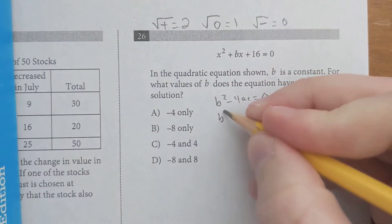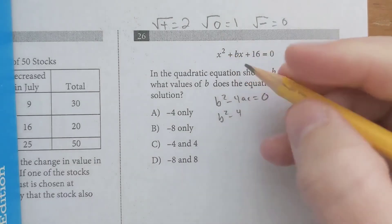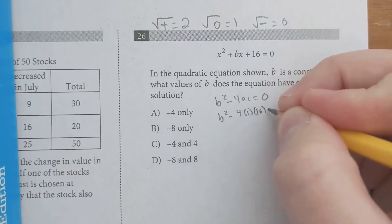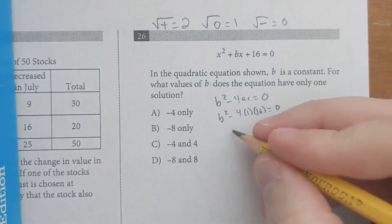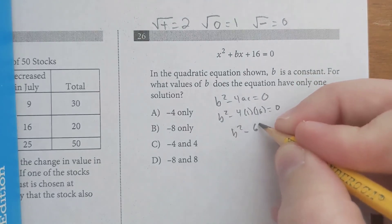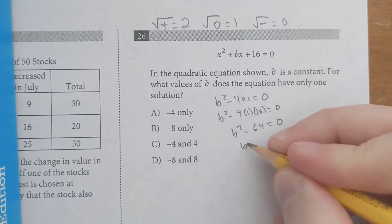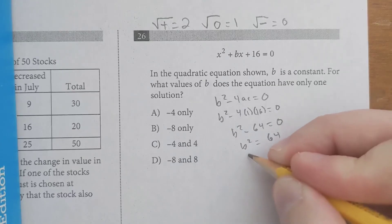Again, our b is b. Our a is 1 this time. Our c is 16. 4 times 16 is 64. So b squared minus 64 equals zero. b squared equals 64. And remember, it's got to be plus or minus 8, so it's a d.